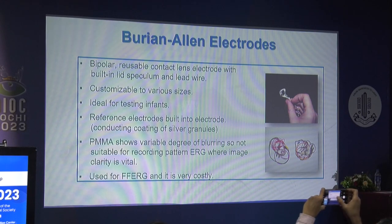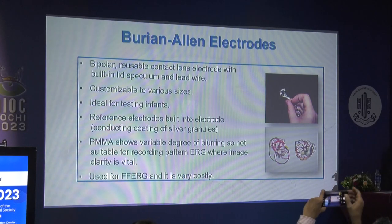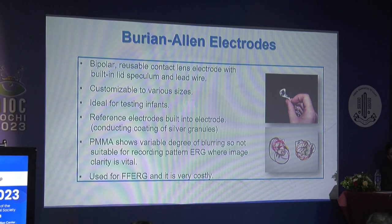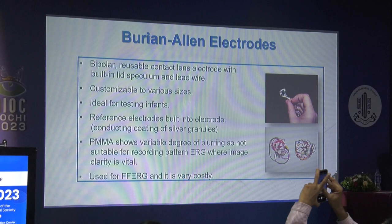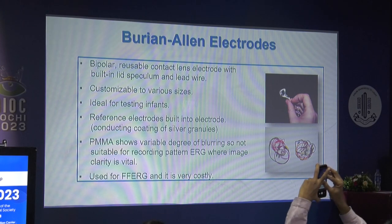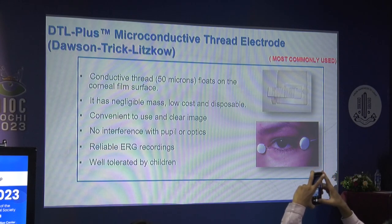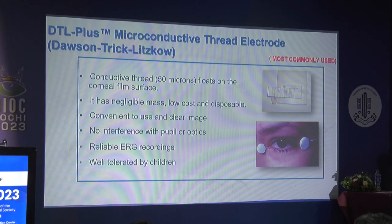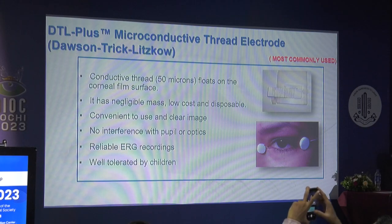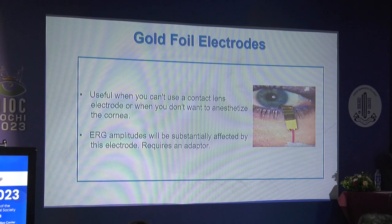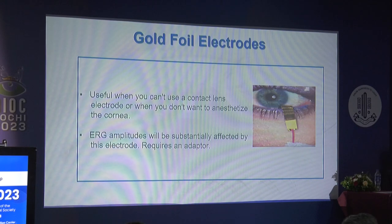The actual electrical impulse recorded is the difference between the active electrode and the reference electrode. The active electrode captures action potential changes and impedance (denoted A); the reference electrode captures impedance only (denoted R); A minus R gives the actual electrical impulse. Jet electrodes are disposable monopolar contact lens electrodes with gold foil on polymethylmethacrylate with lead wire. Burian-Allen electrodes are reusable contact lens electrodes with a built-in speculum, customizable to various sizes, ideal for testing infants. DTL plus microconductive thread electrodes — conductive thread 50 microns on the corneal film surface — are most commonly used, with negligible mass, low cost, disposable, and well tolerated by children. Gold foil electrodes are useful when you cannot use contact lens electrodes or do not want to anesthetize the cornea.